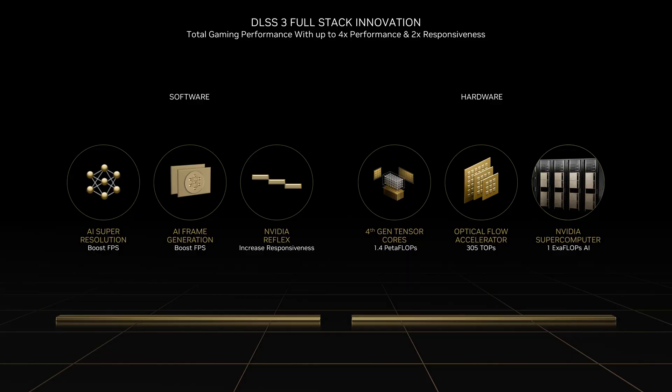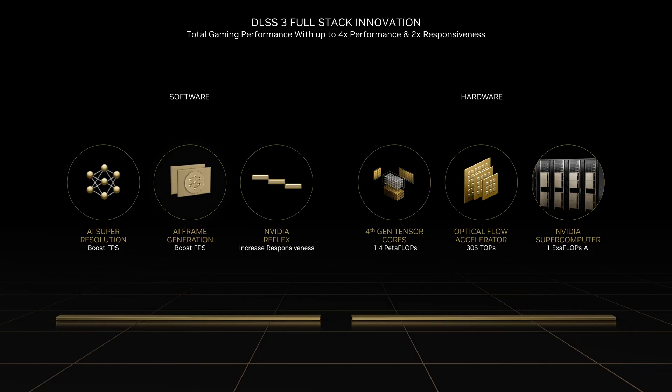DLSS 3 has three main software components. The first is DLSS Super Resolution. We are continuing to develop DLSS Super Resolution for all GeForce RTX gamers, and it's a core part of DLSS 3. The second component is DLSS Frame Generation, where we use optical flow acceleration and neural networks to create additional frames to increase smoothness.